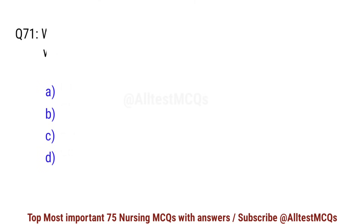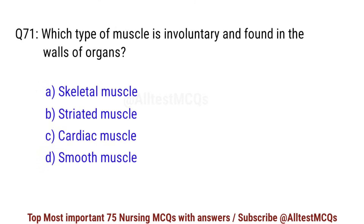Question number 71. Which type of muscle is involuntary and found in the walls of organs? Correct option is D: Smooth muscle.